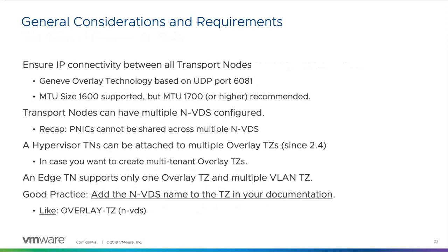Some general considerations — items you should know for the exam. We want to ensure IP connectivity between the hosts; we don't care what the IP connectivity is, it just needs to be there and the TEP network needs to be rock solid. There's been talk about MTU size of 1600, but realistically with Geneve, 1700 is kind of the new minimum — 1600 is still the official minimum. If you're enabling jumbo frames on a physical network, you may as well just turn it all the way up, and that way you don't have to worry about it ever.